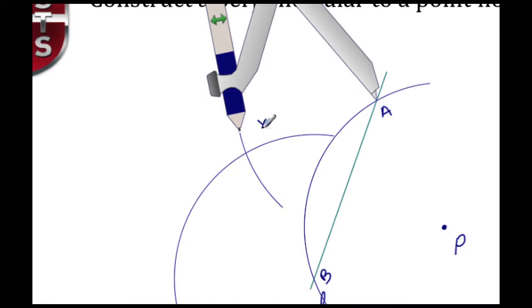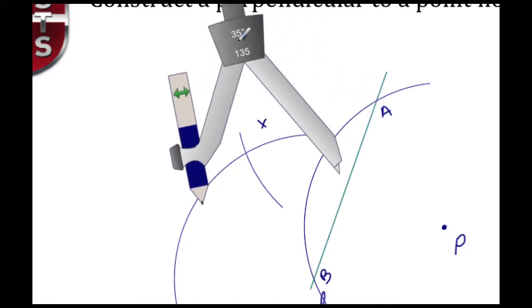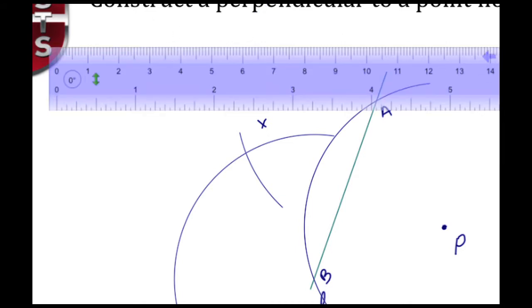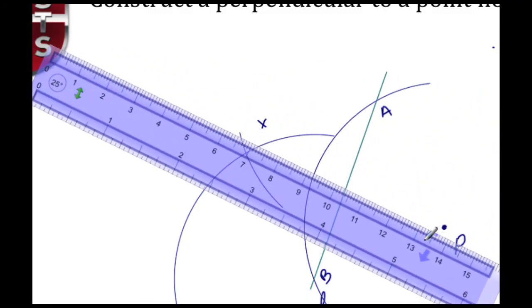Next thing I need to do is call up my straightedge because I need to draw the line from point X to point P. That's going to be the perpendicular, creating the 90-degree angle that also goes through point P. Let's call up the ruler tool and put that in place.